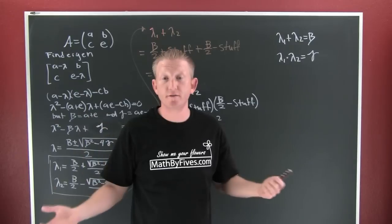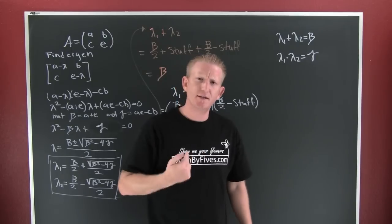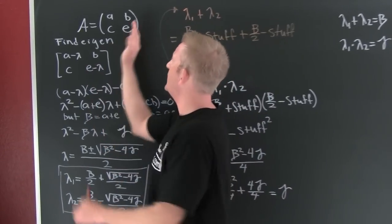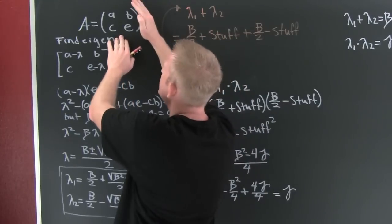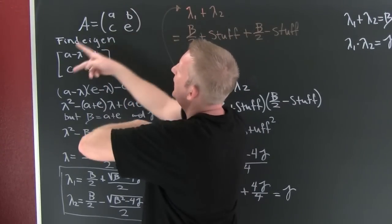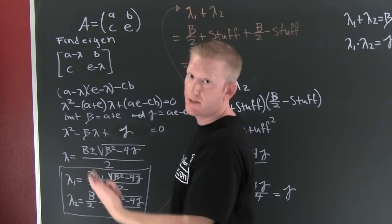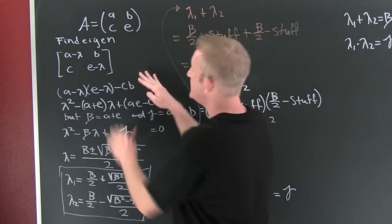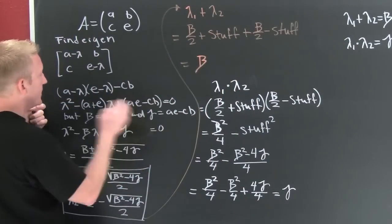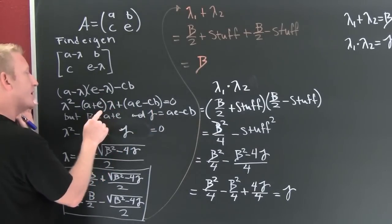Every once in a while you'll find something in mathematics that absolutely fascinates you. This is one of those things. If I took my two by two coefficient matrix and tried to find my eigenvalues — doing the usual trick, A minus lambda times the identity matrix — I would take the determinant and set it equal to zero. After you FOIL out or collect like terms, ba-boom, you're right here.